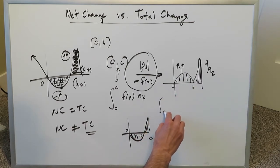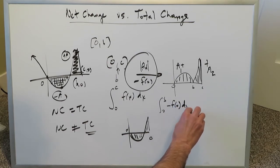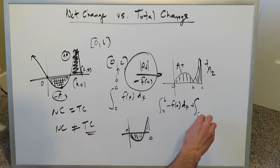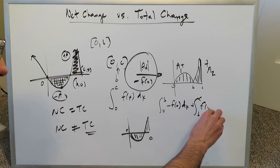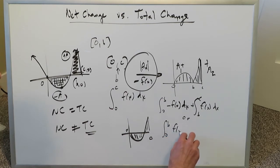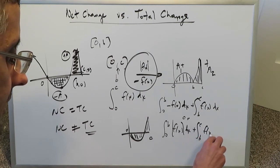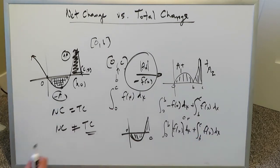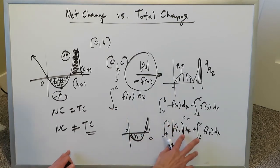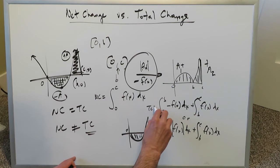In terms of the integration scheme for total change over zero to c with a zero crossing at b: from zero to b you write minus f of x dx — to convert that negative area to positive — then add from b to c the basic function f of x dx, which is already a positive area. Or equivalently, write the absolute value of f of x over the full interval.